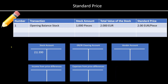First of all, we have the standard price. Let's imagine we have a total stock balance of 1,000 pieces of pens. One pen is valuated with a standard price of 2 euro. This means that we multiply the 2 with the 1,000, which gives us a total stock value of 2,000 euro. This amount would be debited on our stock account.